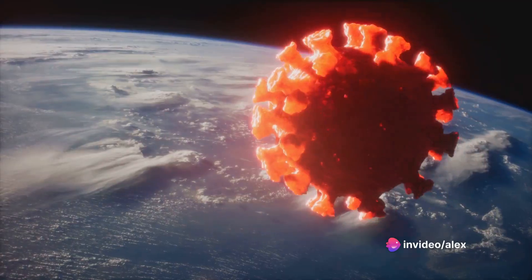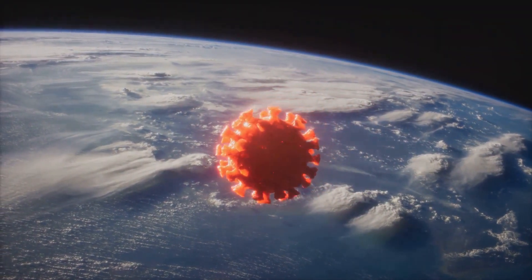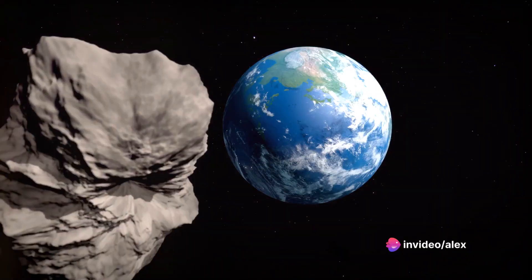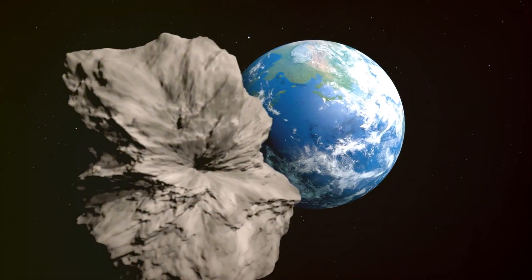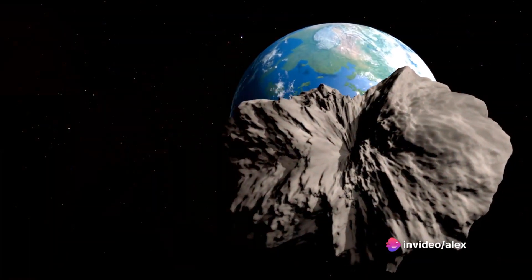And there's one more thing. If the asteroid hits at just the right angle, it could even knock the Earth off its axis entirely. This would cause a true doomsday scenario, with the planet's surface becoming uninhabitable due to the extreme changes in climate and the shift in the magnetic field.